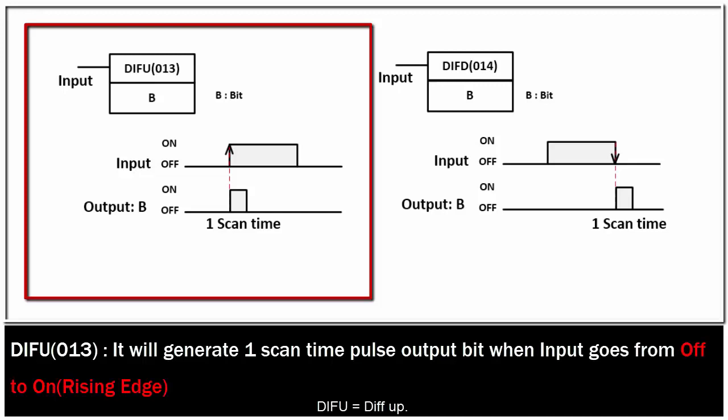DIFU or DIFUP will generate one scan time pulse through a specified bit B. When rising edge input comes, the input goes from OFF to ON. The bit B will ON only one pulse even though the input still ON.